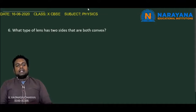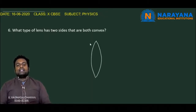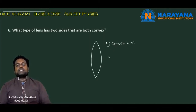The sixth question: What type of lens has two sides that are both convex? If both sides of the lens are bulged out or convex, we call this lens a biconvex lens. An example of a biconvex lens is the magnifying glass.